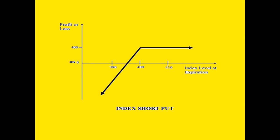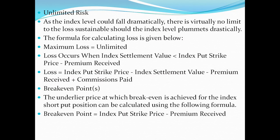This is the diagram — you can see that I will show you the example. On the X-axis, the index prices are 390, 400, and 410. On the Y-axis, the profit and loss is shown, so you have to correlate with the example. Unlimited risk: as the index could fall dramatically, there is virtually no limit to the loss sustainable should the index decline drastically.